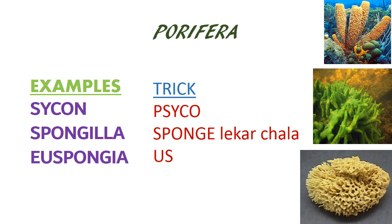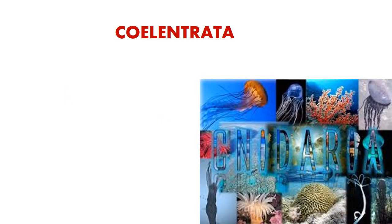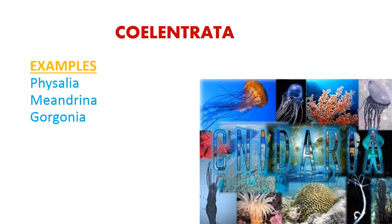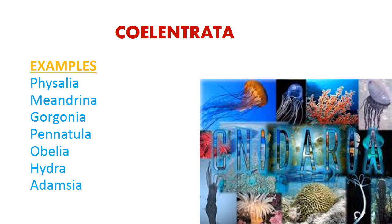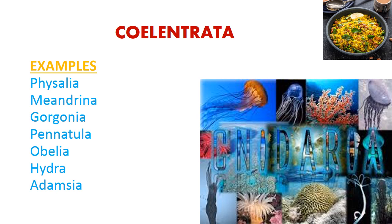The next phylum is Coelenterata, also known as Cnidaria. The examples given are Physalia, Meandrina, Gorgonia, Pennatula, Obelia, Hydra, and Adamsia. For them, the trick involves yummy poha that you eat for breakfast — just remember that and you will be done with the trick.